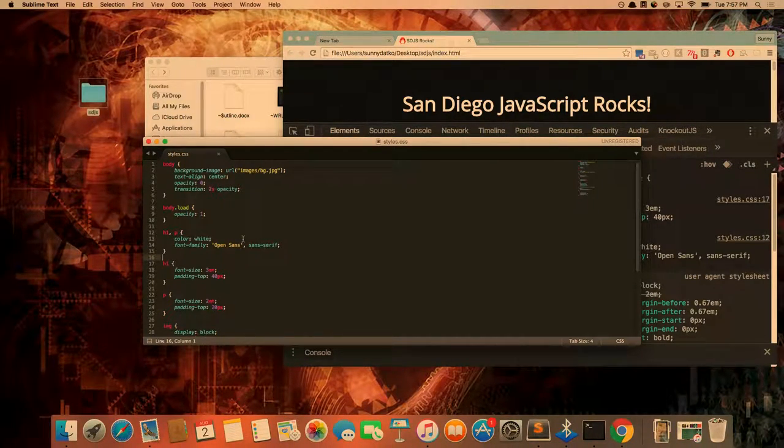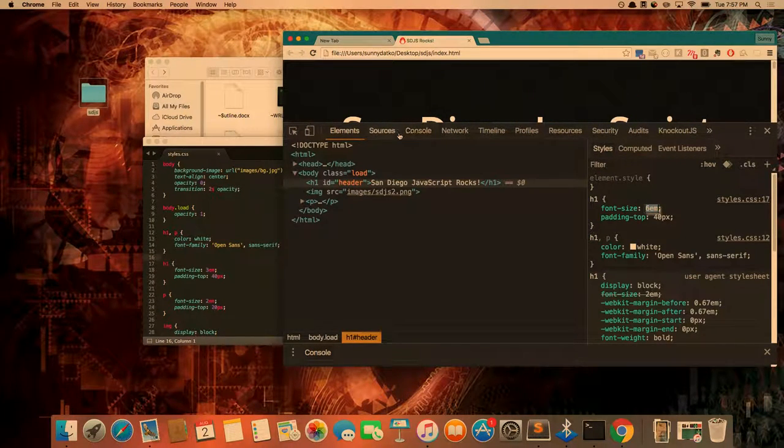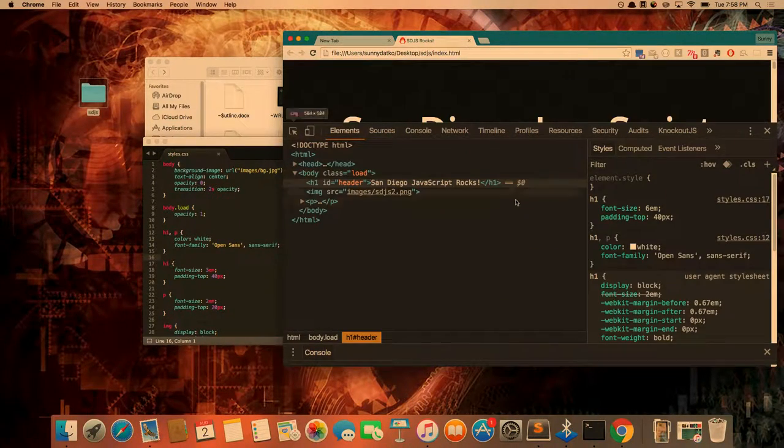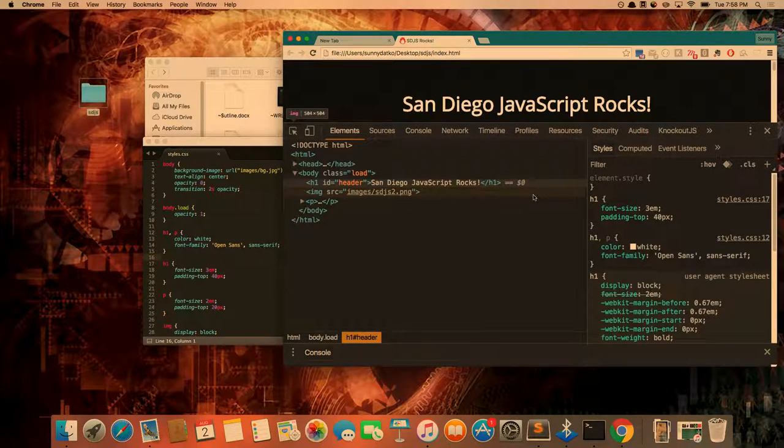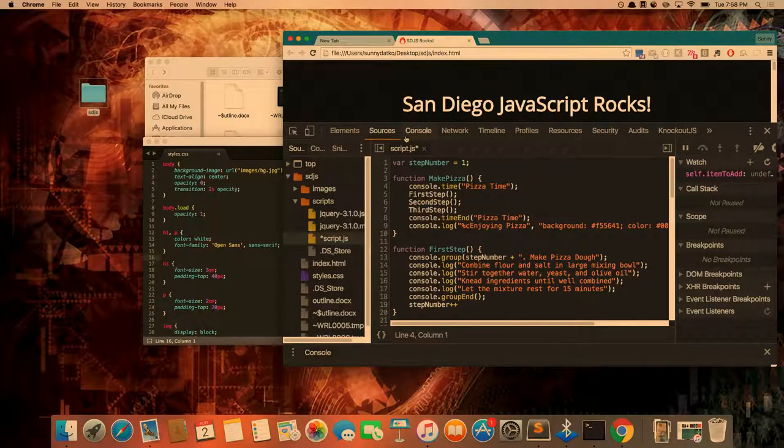Chrome actually has really astounding undo support. I can go here, make some changes, go over to my sources tab, make some changes here, and then go back to my elements panel. If I just hit command Z, it still remembers the changes that I made and will undo them. If I go back here to the sources tab, it'll still undo those. It is tied to whichever panel you're on at the time. So if you're in the elements panel, you need to be on the elements panel to undo those changes.